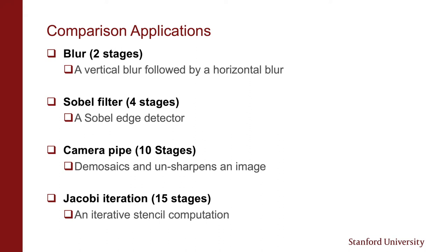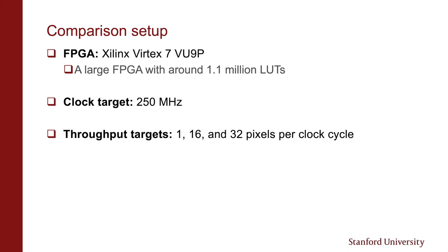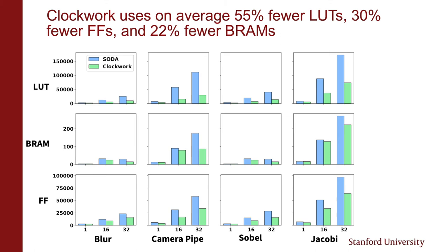We compare four applications: a vertical blur followed by horizontal blur with two stages, a Sobel edge detector with four stages, a camera pipeline with 10 stages that demosaics and unsharpens an image, and Jacobi iteration with 15 stages as an iterative stencil computation. We use a Xilinx Virtex 7 VU9P — a large FPGA with around 1.1 million LUTs — targeting 250 MHz, generating variants at 1, 16, and 32 pixels per clock cycle. Clockwork uses on average 55% fewer LUTs, 30% fewer flip-flops, and 22% fewer BRAMs than SODA at the same throughput and clock target.